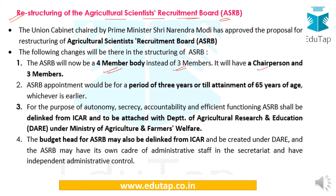ASRB will now have a chairperson and 3 other members. The appointment will be for a period of 3 years or till the age of 65 years of the members. Through this step, the government is trying to provide autonomy and accountability to ASRB by delinking it from ICAR — the Indian Council of Agricultural Research — and attaching it to DARE, the Department of Agricultural Research and Education. DARE functions under the Ministry of Agriculture and Farmers Welfare, and the budget has also been delinked from ICAR and created under DARE.